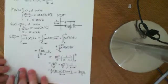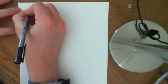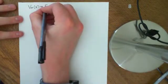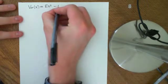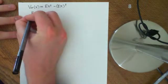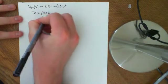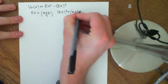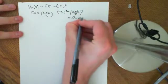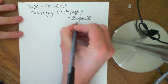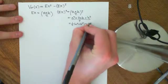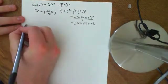Now we'll work out the variance of a continuous uniform distribution. The variance of X is defined as E[X²] − (E[X])². We know E[X] = (A + B)/2, so (E[X])² = ((A + B)/2)² = (A² + 2AB + B²)/4.